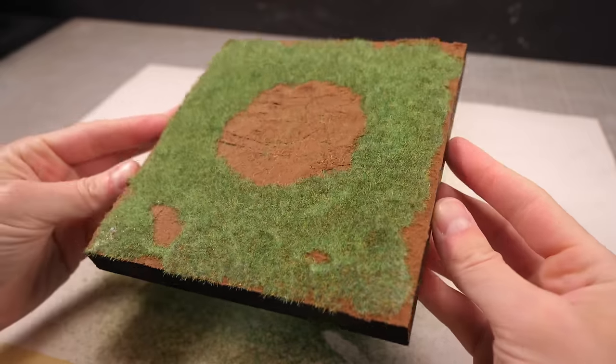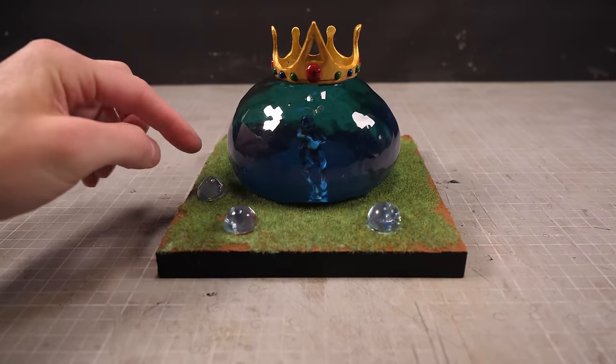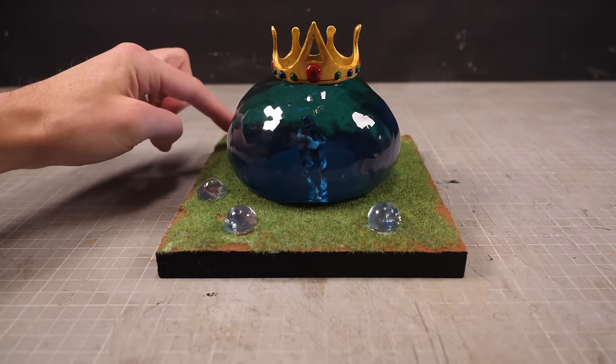All that's left to do then is drop my king slime in place, add the quintet of little slimes and that's us done here and onto the glamour shots.